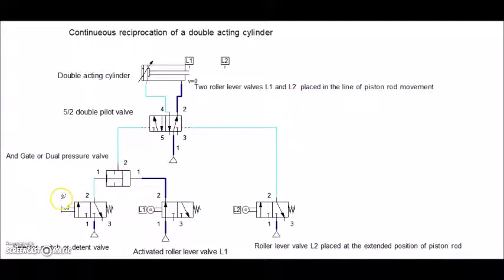Let me just press the selector switch. As the selector switch is pressed, the signal can go through this passage to the AND gate. Once it reaches the AND gate, the signal would reach the 5x2 double pilot valve as shown by the thick blue lines. This would change the actuating position of the 5x2 double pilot valve.